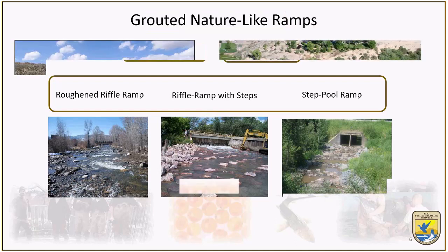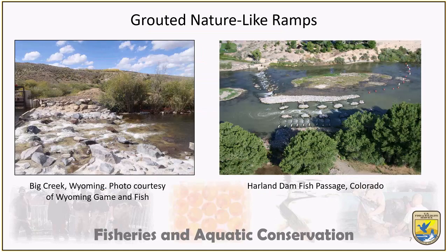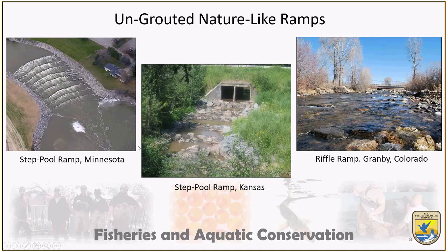In this region, there are ungrouted and concrete grouted types of ramps. We're going to concentrate on the ungrouted portions for this talk. There are three major design alternatives I've seen across this region: roughened ramp, roughened ramp with steps, and a formal step pool morphology. We'll walk through these when we get to the design process. Just quickly on grouted nature-like ramps — the grouted ones are typically made for specific species, typically non-salmonid, such as the one in Big Creek in Wyoming and one at the Harlan Dam on the Colorado River.